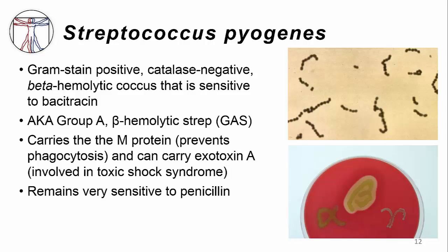Beta hemolysis is complete hemolysis of agar, as you can see in the lower right-hand panel. When you're on the ward, you may hear this referred to as group A beta-hemolytic strep, or GAS — this is the same organism. Group A beta-hemolytic strep carries an M protein, which prevents phagocytosis, and some strains can carry exotoxin A, which is involved in toxic shock syndrome, a very serious and potentially life-threatening infection. Fortunately, in all these cases, it is sensitive to penicillin and other beta-lactam antibiotics.